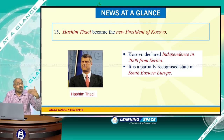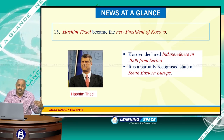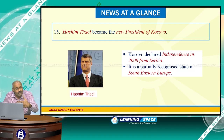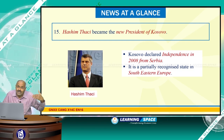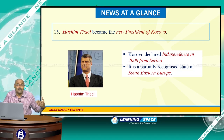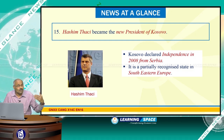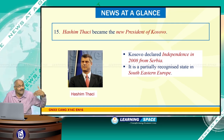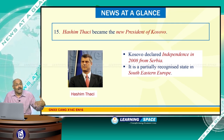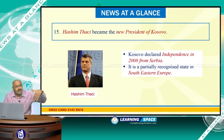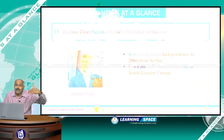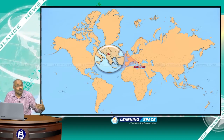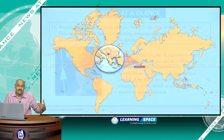Hashim Thaçi became the new president of Kosovo. Kosovo declared independence in 2008 from Serbia; it is a partially recognized state — some countries recognize Kosovo as an independent country and some do not. Kosovo is located in southeastern Europe.